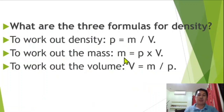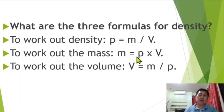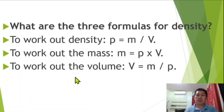To work out the mass, the mass is equal to density times volume. To work out the volume, volume is equal to mass over density.